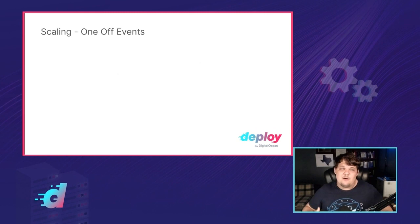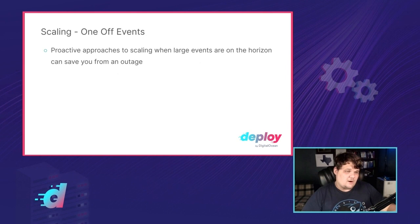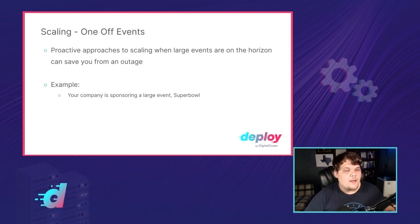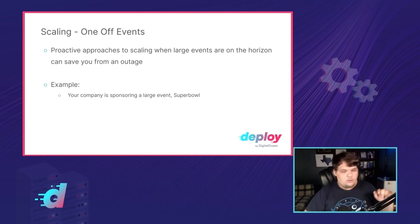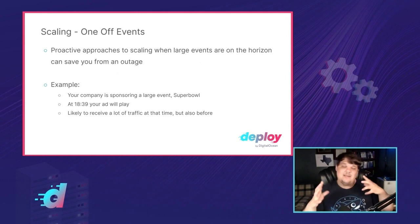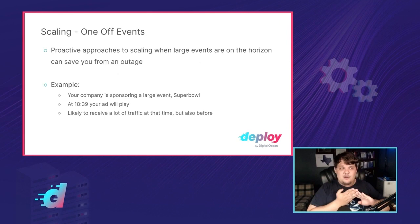You also need to be prepared to scale for one-off events. Being proactive about large events on the horizon for your company or app can save you from an outage. Black Friday is going to happen. Here's an example I may have experienced in my career: say your company is sponsoring a very large sporting event — we'll say the Super Bowl — and at 18:39 in the evening, your ad is going to play. It's very likely you're going to get a large amount of traffic to your app at the time your ad plays. That's the whole purpose of ads.